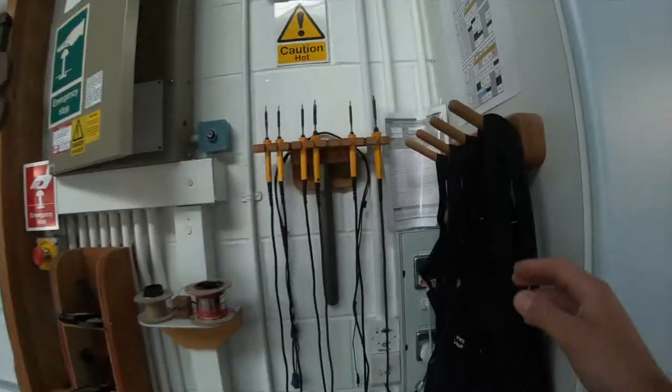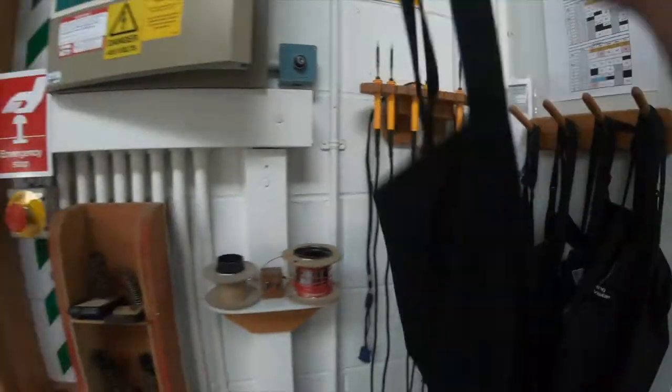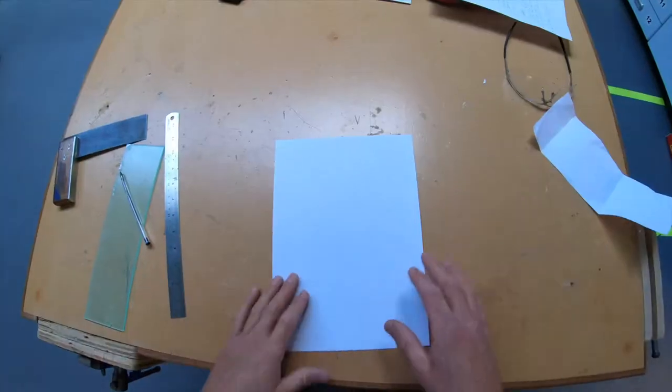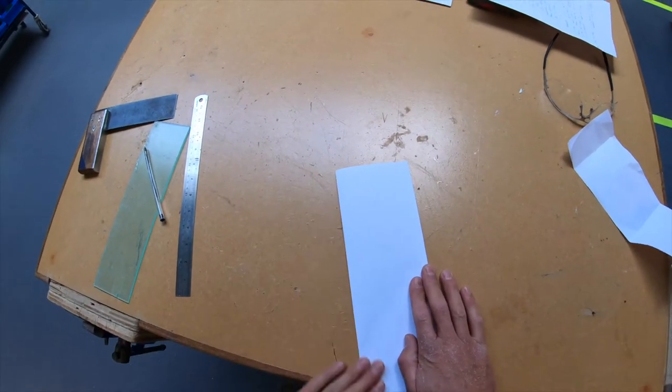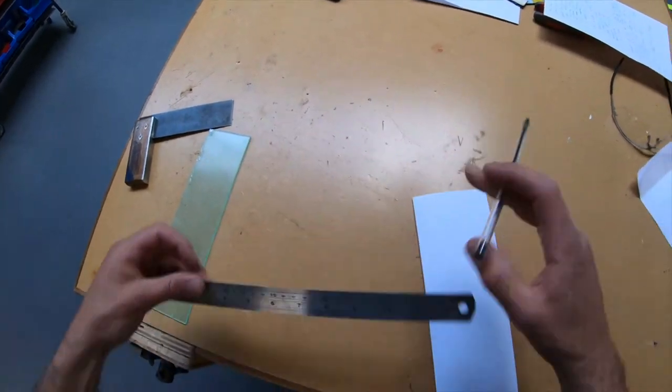In the workshop get your apron on and pick a workstation with people you usually work with. You're going to need a piece of acrylic but it's a good idea to make a little card model first from an A4 piece of paper folded in three.